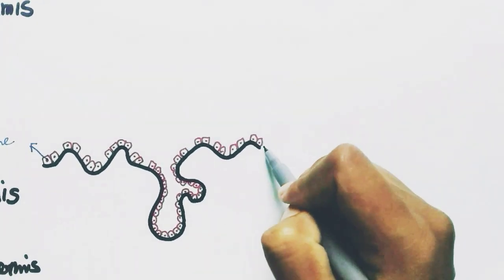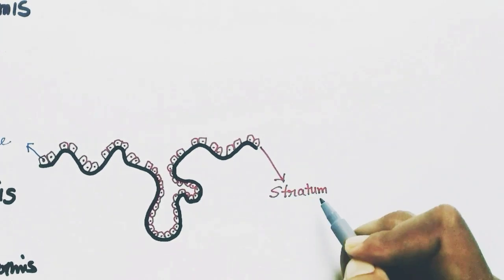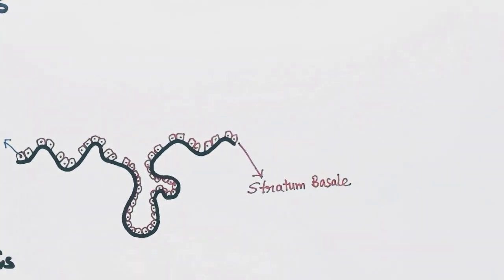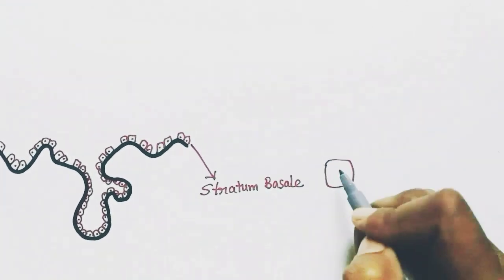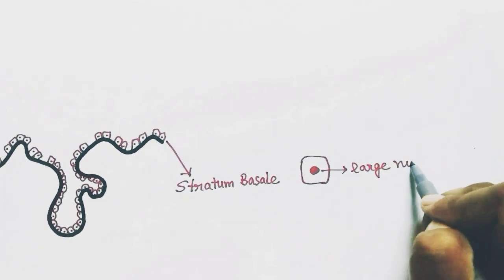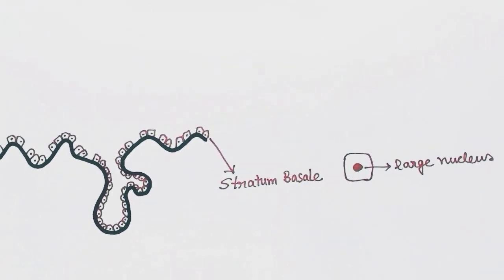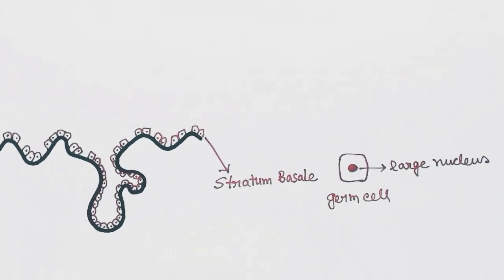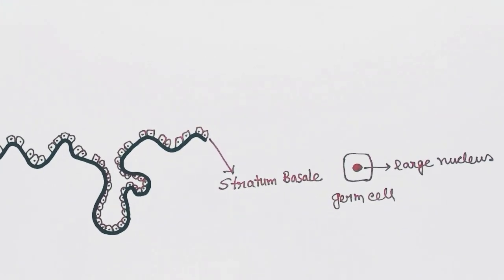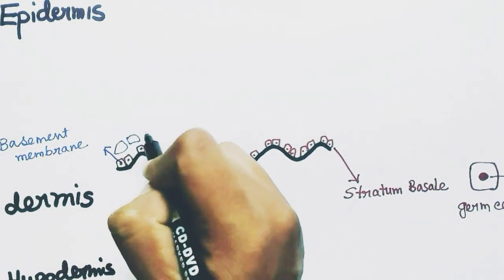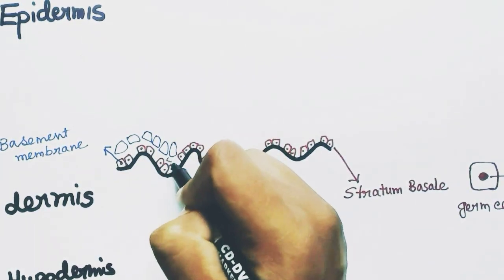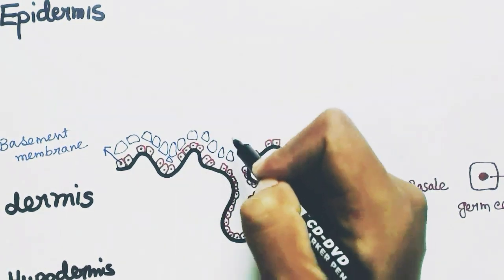This first layer of the epidermis is called the stratum basale, that is the base layer. These cells have a large nucleus and are also called germ cells. These cells divide and produce new cells, forming the next layer of the epidermis.